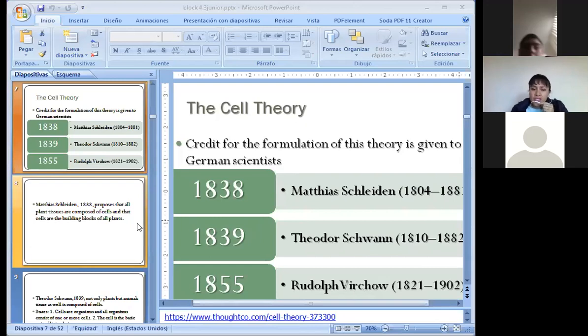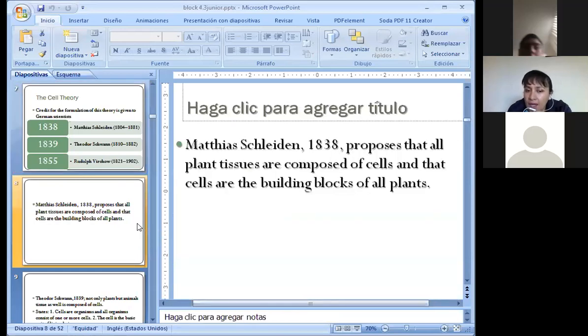So, as you say, Matthias Schleiden, Theodor Schwann, and Rudolf Virchow were the ones that formulated the cell theory. And they proposed three statements, as you say. In 1838, Matthias Schleiden said that plant tissue are composed of cells and that cells are building blocks of all plants.